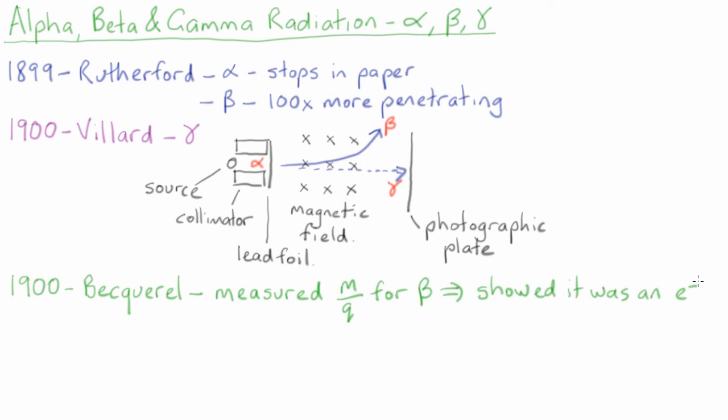In 1907, Rutherford and Boyd's proved that alpha particles were positively charged helium atoms.